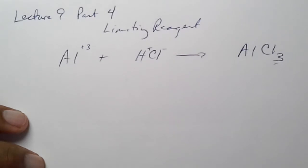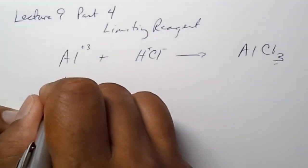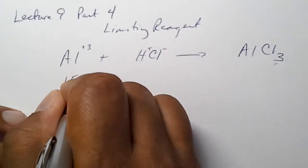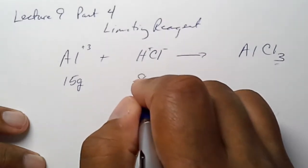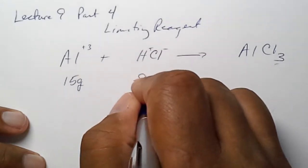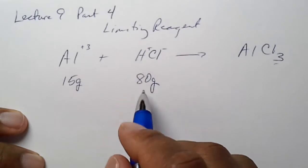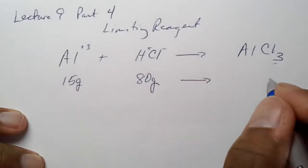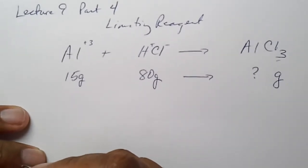Now, the question is, if I have 15 grams of aluminum and let's say 80 grams of hydrochloric acid, how many grams of product can I make?